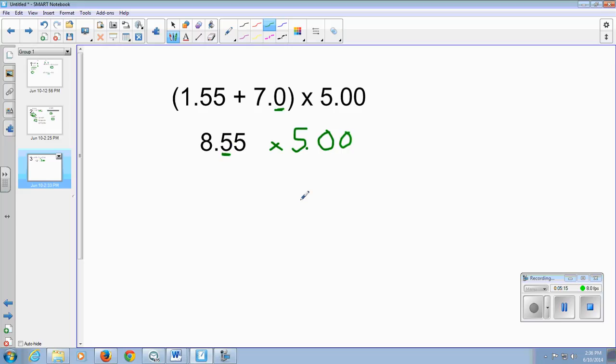So 8.55 times 5.00 is going to give us an answer of 42.75. So this only having 2 significant digits, this number having 3, our answer should have 2 significant digits. So 42, going from left to right, would round to 43, which is 2 significant digits in our final answer.